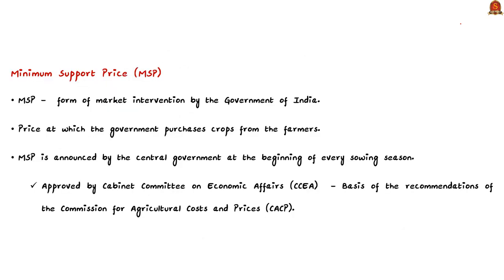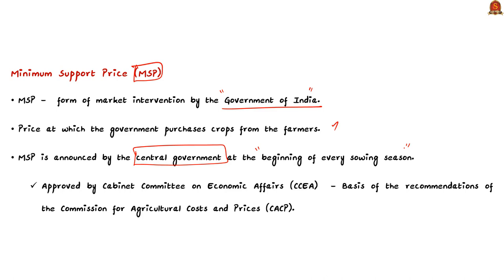What is Minimum Support Price or MSP? MSP is a form of market intervention by the Government of India. It is the price at which the government purchases the crop from the farmers, protecting them against any sharp fall in prices. MSP is announced by the central government at the beginning of every sowing season. MSP is approved by the Cabinet Committee of Economic Affairs chaired by the Prime Minister on the basis of recommendations by the Commission for Agricultural Cost and Price or CACP.